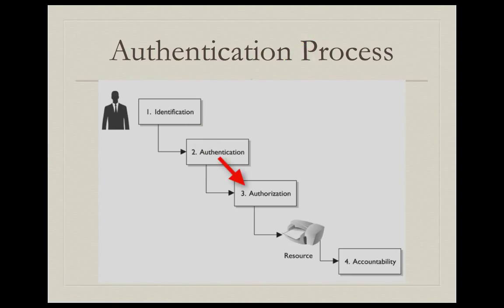The next step is authorization. Once a user has access to resources, the applications or network resources they want to access are set up so that these resources know who is allowed to access them and what those people are allowed to do once they access them. This is authorization. Authorization controls three things we're going to discuss later: least privilege, need to know, and separation of duties.